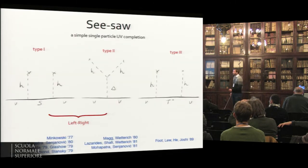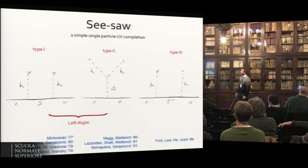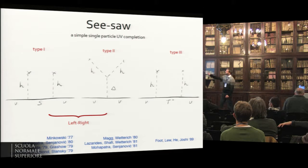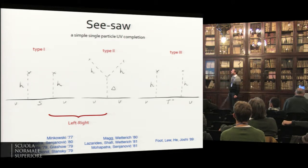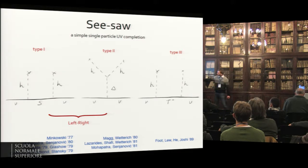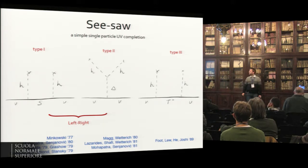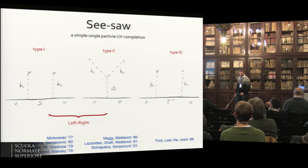Just to set up the notation: a typical way to accommodate neutrino mass is to add a simple single UV completion, which could be a fermion singlet, scalar triplet, or a fermion triplet. In particular, in the original paper on the seesaw, these two came from a left-right symmetric theory, and I'll focus a little bit on this theory also in the following.